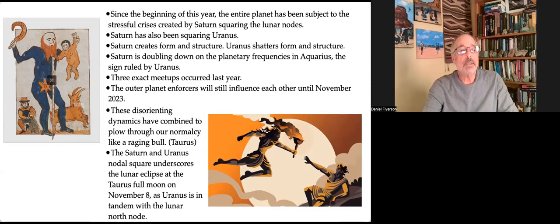Since the beginning of this year, the entire planet has been subject to the stressful crises created by Saturn squaring the lunar nodes. Saturn has also been squaring Uranus. Saturn creates form and structure. Uranus shatters form and structure.